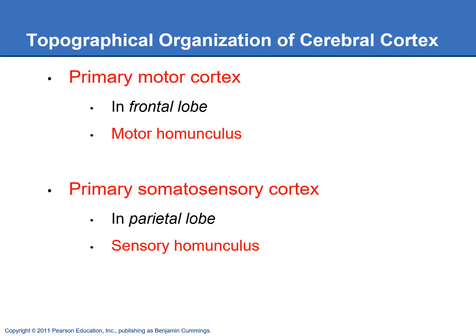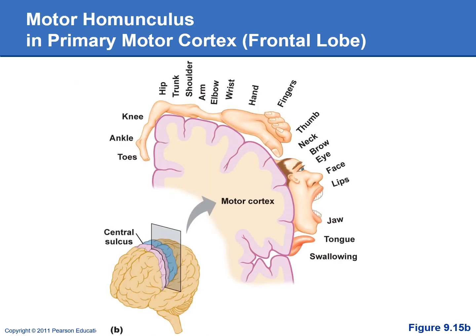Let's take a look at the primary motor cortex and the primary somatosensory cortex — two really important areas of the brain. The primary motor cortex is located in the light purple area here, at the very back of the frontal lobe. The neurons here go down to the spinal cord and synapse onto motor neurons that then innervate skeletal muscle.